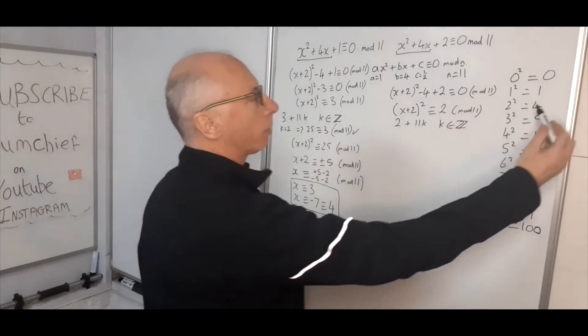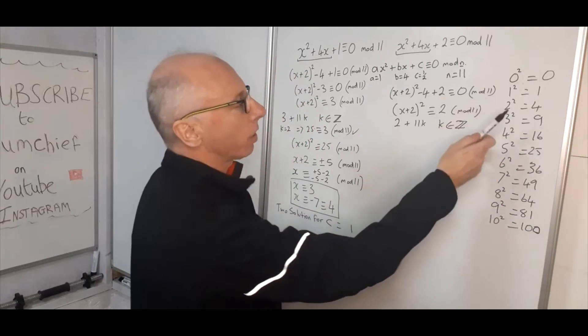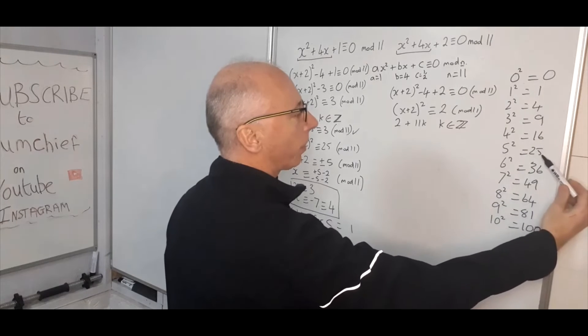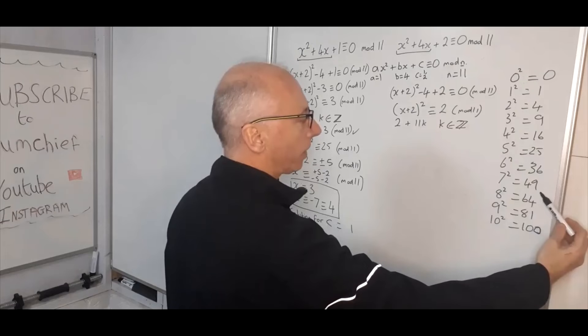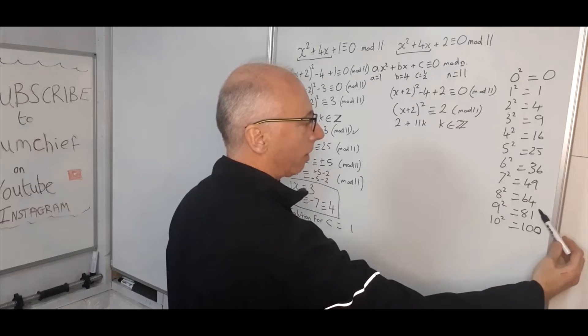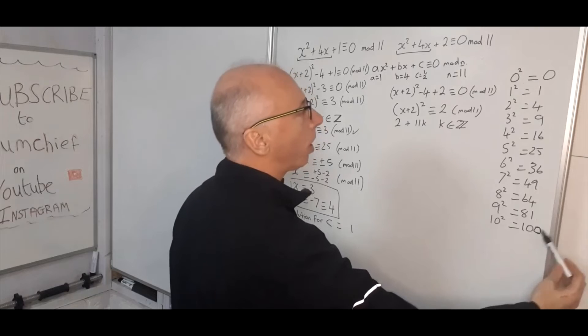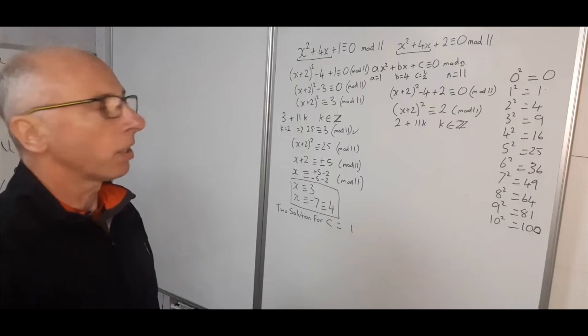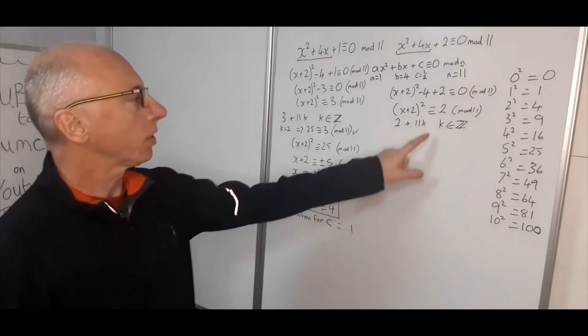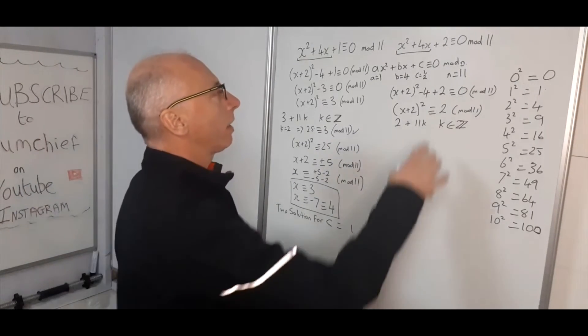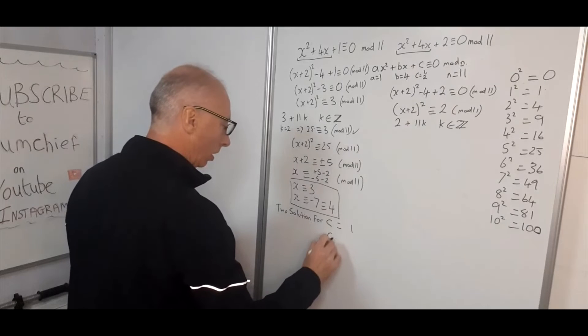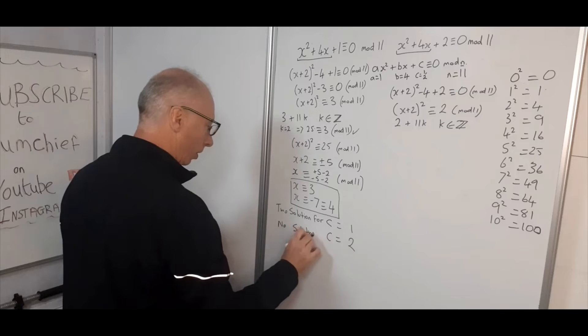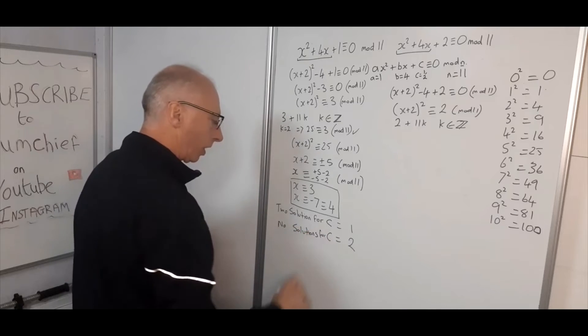So we've got 2, which is obviously not here, keep adding on 11, so we've got 2 plus 11 is 13, 24, 35, 46, 57, 68, 79, 90, then 101 takes us back here. Okay, so that's not looking like there's any solutions at all to give us a perfect square. So therefore what we say is that when c equals 2, we'll say there are no solutions for c equals 2.